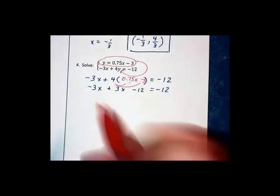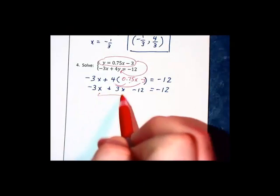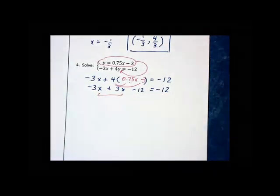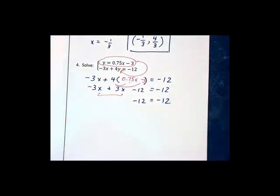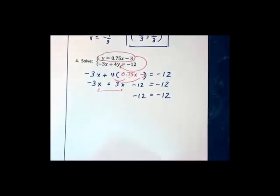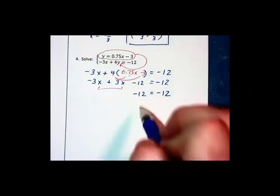If you're one step ahead of me, you're noticing our x's cancel out. We end up with negative 12 equals negative 12. When we get a true statement such as this, we have an identity.